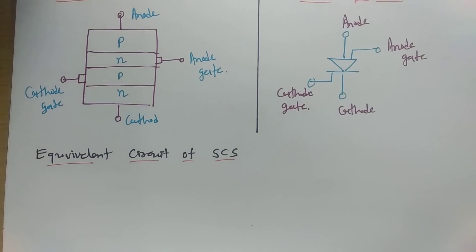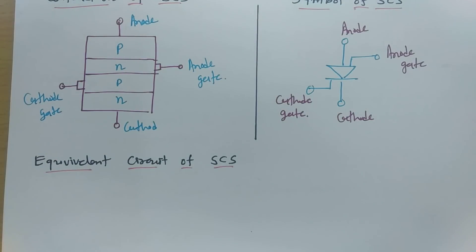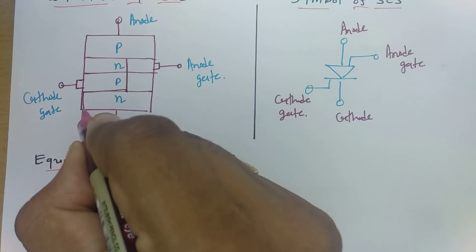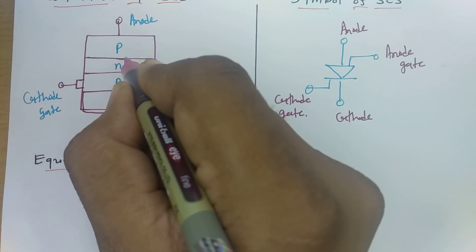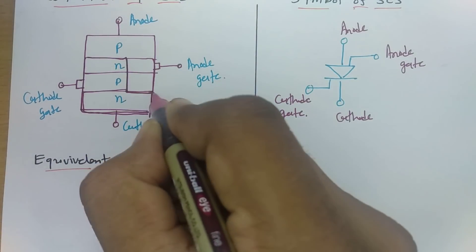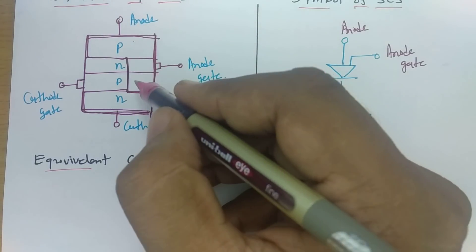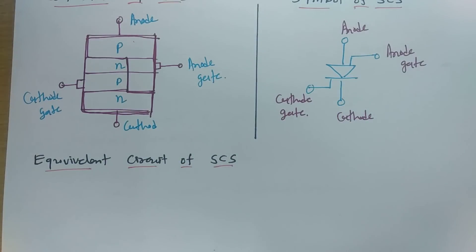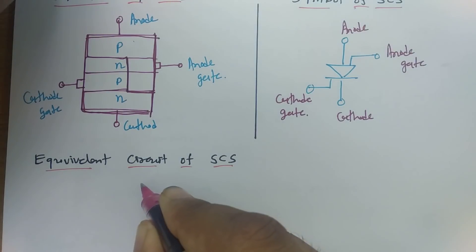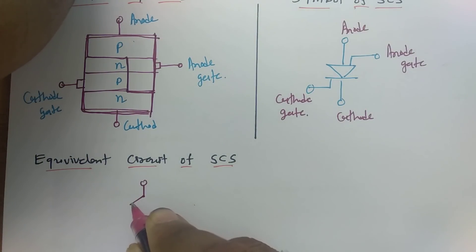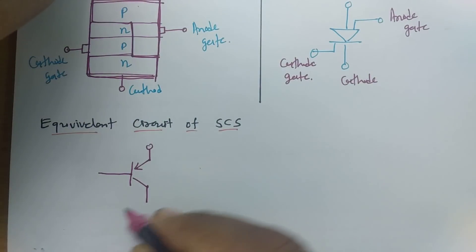Now let us look at the equivalent circuit. We can bisect the SCS structure into two parts. One part gives us a PNP transistor and the other gives us an NPN transistor. The P-type material is connected to the anode, and to the N-type material there is the anode gate — so the base of the PNP transistor is connected to the anode gate.